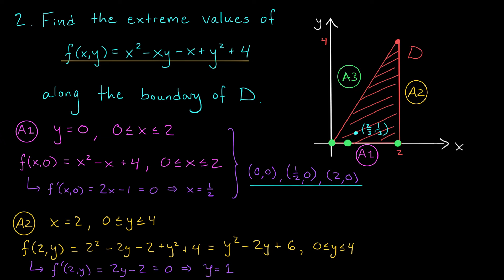Okay, now we also throw in our endpoints, y equals 0 and 4, and that gives us three more candidates to check. (2,0), (2,1), and (2,4). You can see all six of these points labeled in our graph.